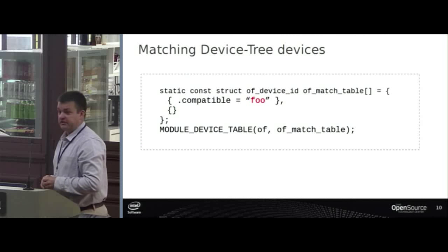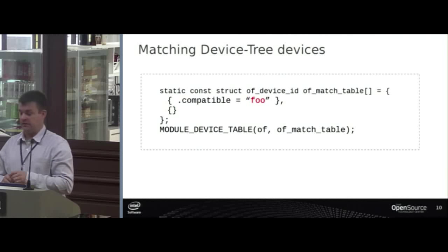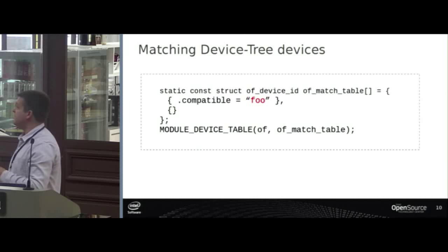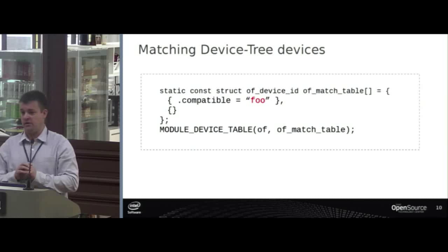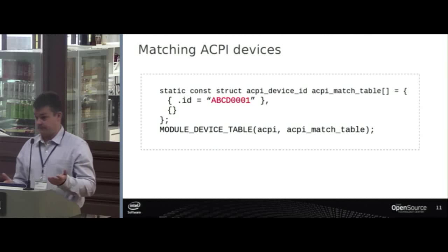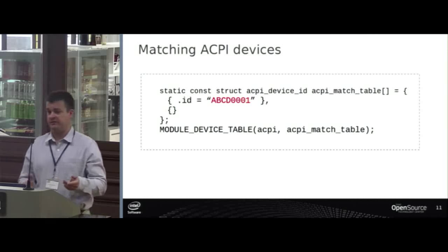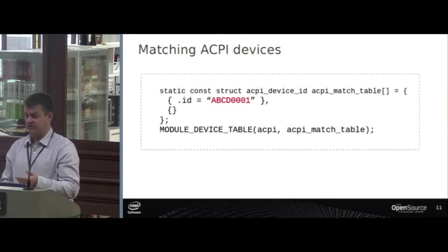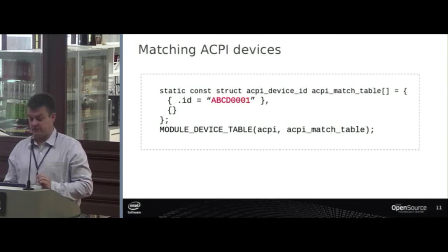The remaining part of the problem is matching devices. This is how you match a device tree device: you provide a table of devices you recognize by their compatible string, give a module device table so the device can be auto-loaded, and in your device driver you give a reference to the same match table. When a device tree device is discovered with a given compatible string, your probe function is called and you bind to the device. For ACPI it works similarly, except the device ID is different, so you have to have a different device ID and modify the driver. At this point, if you want to use a device tree driver in ACPI, you still have to hack the driver.